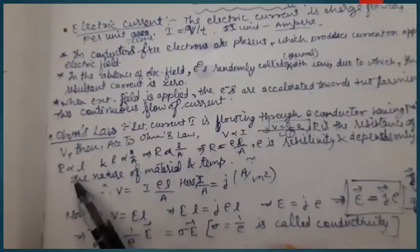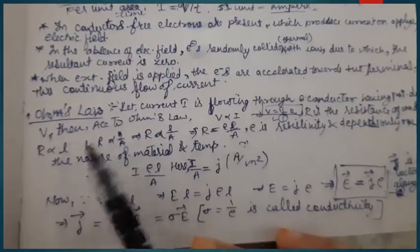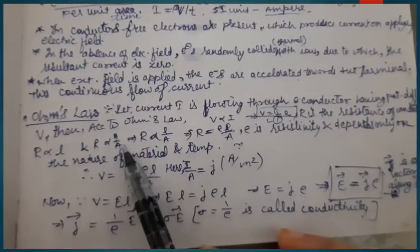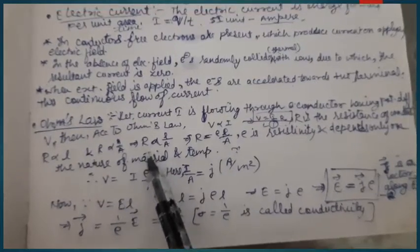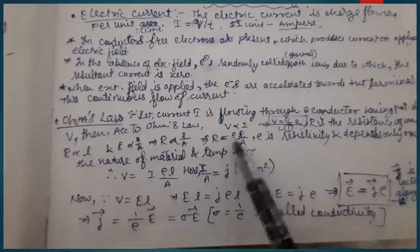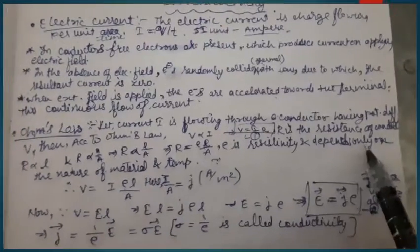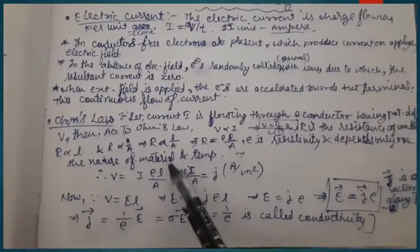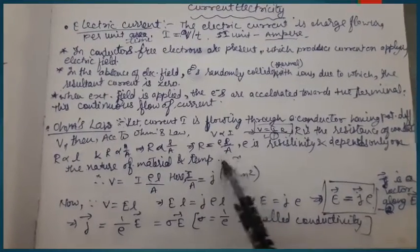Resistance is inversely proportional to the area of cross-section. When we remove the proportionality sign, we introduce the constant ρ and get R = ρl/A, where ρ is the resistivity. Resistivity depends only upon the nature of the material and temperature. Putting this value of R in Ohm's law equation, we have V = I(ρl/A).